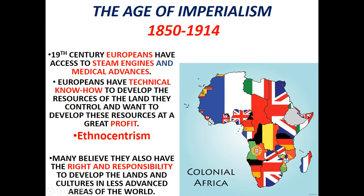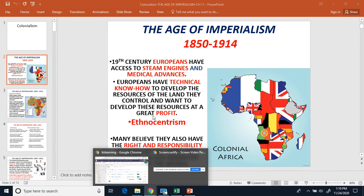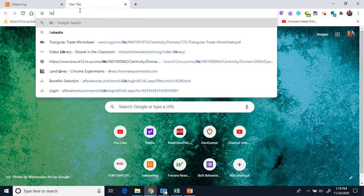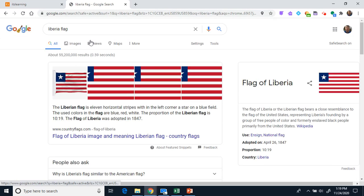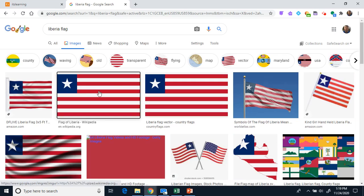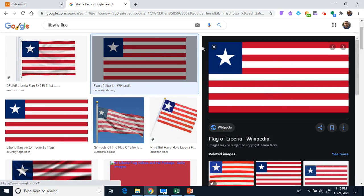You also notice there are two places in gray — these are independent kingdoms, territories or countries that stayed independent from European nations. One being Ethiopia and the other one being Liberia. Liberia was established by freed slaves from the United States who went back to West Africa and established their own country. That's why if you see the country flag of Liberia, it looks very similar to the United States flag.